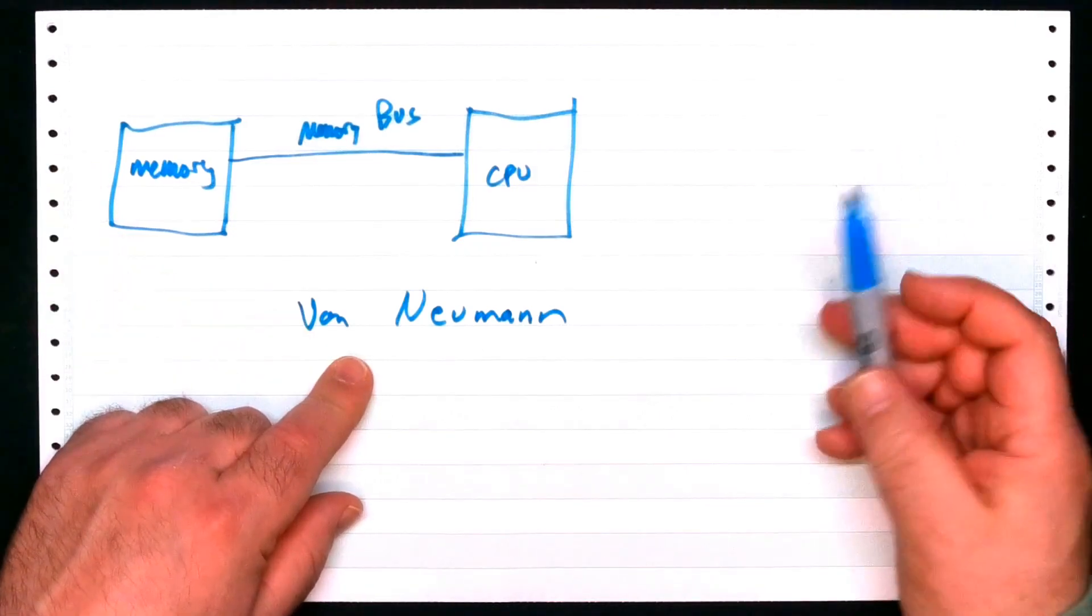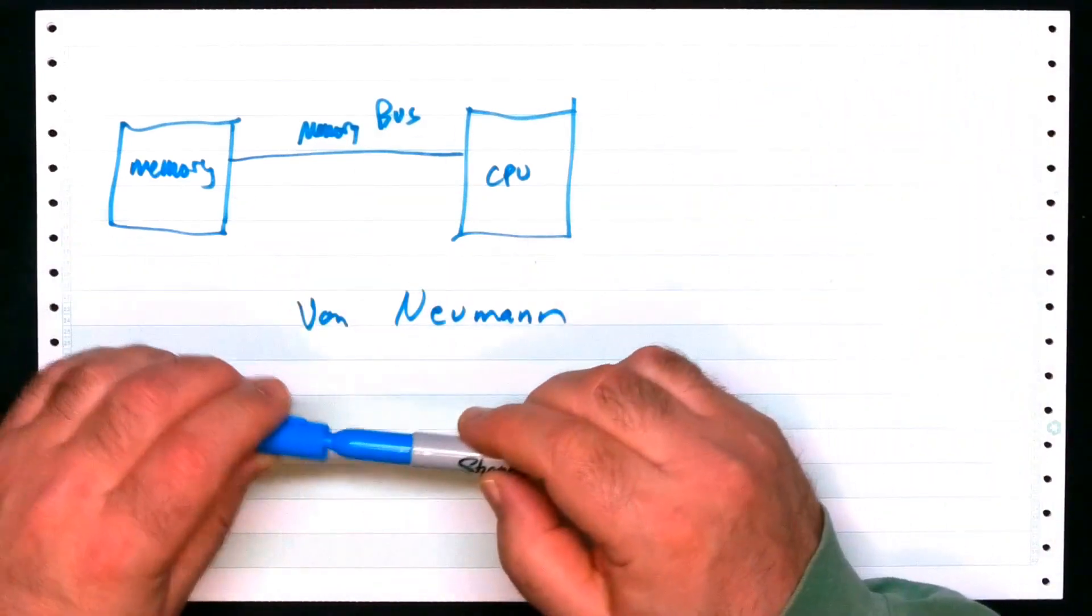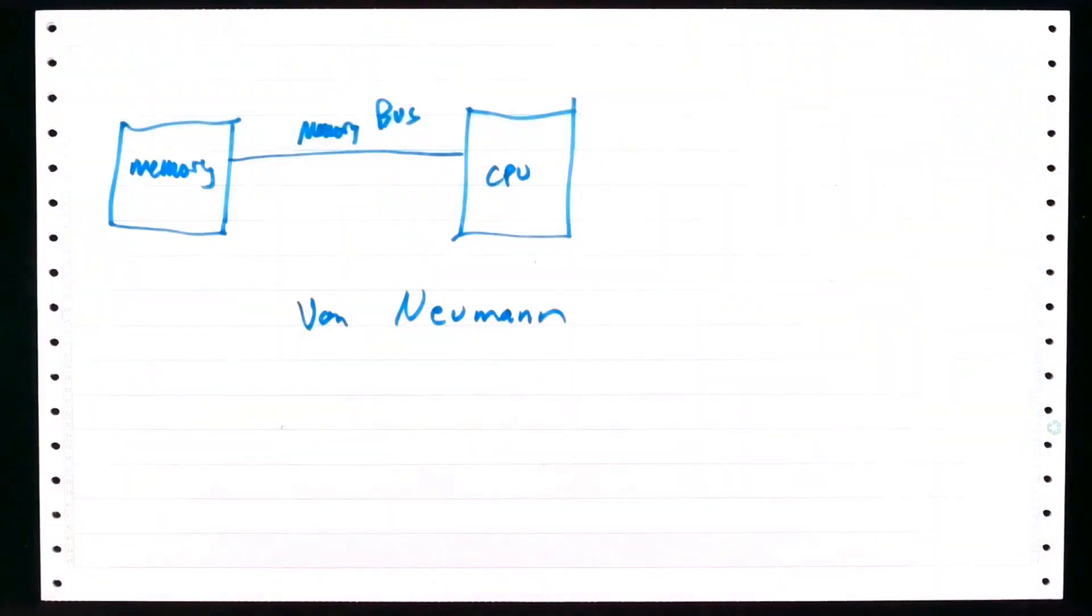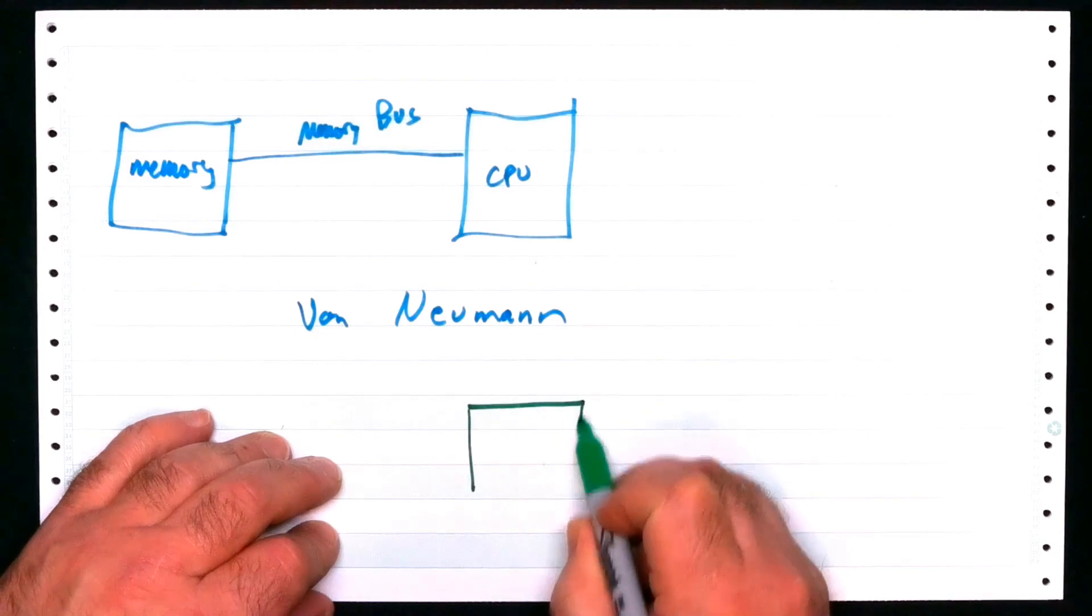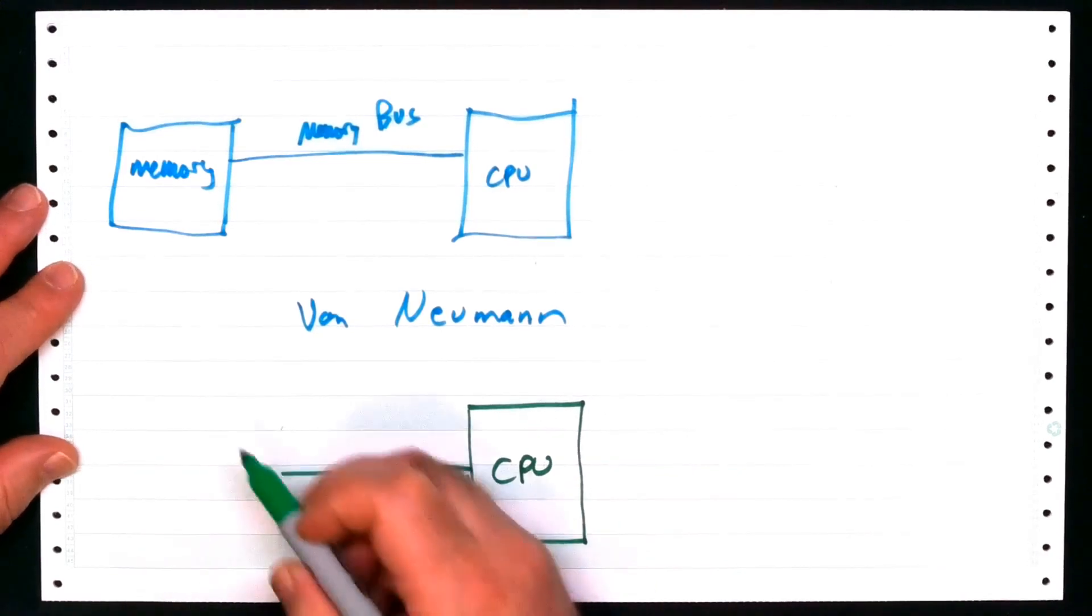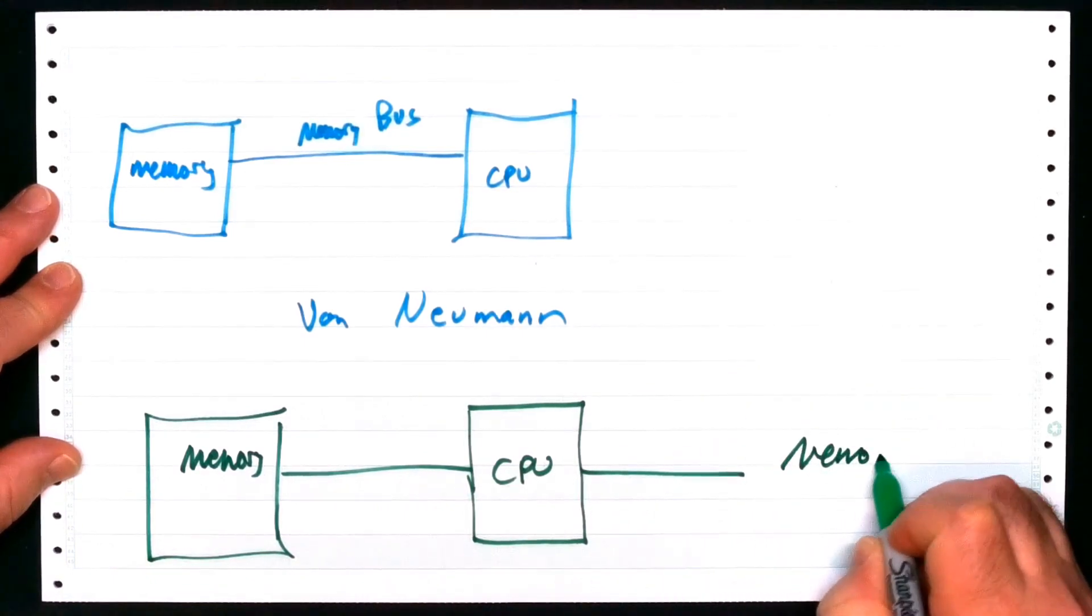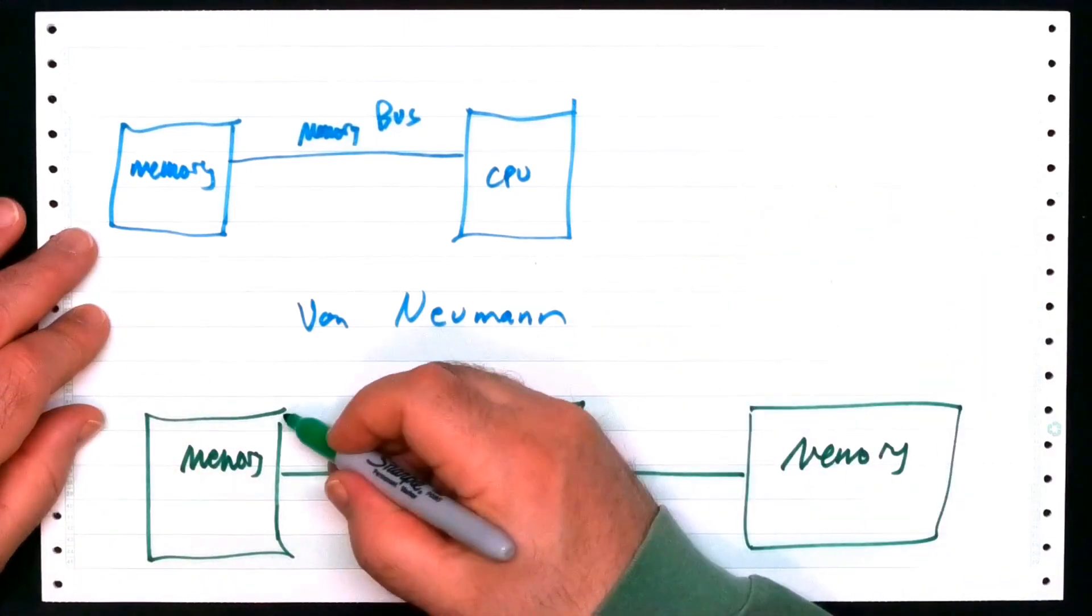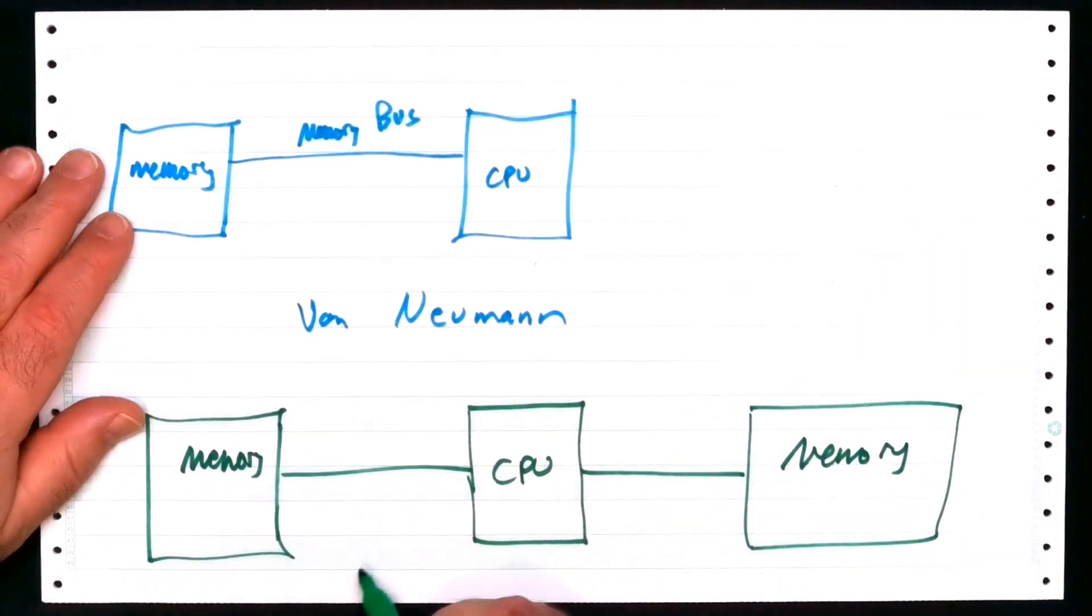And why do I know that? Because the CPU has one bus connecting to one memory. Now, this is in stark contrast. Let's change the color. Here's another kind of a way of accomplishing this similar kind of a task. Let's say I have a CPU that looks like this, and I have a memory bus that goes like that, and I have another one. Why not? I can have more gates, more wires and stuff like this. What's that all about?